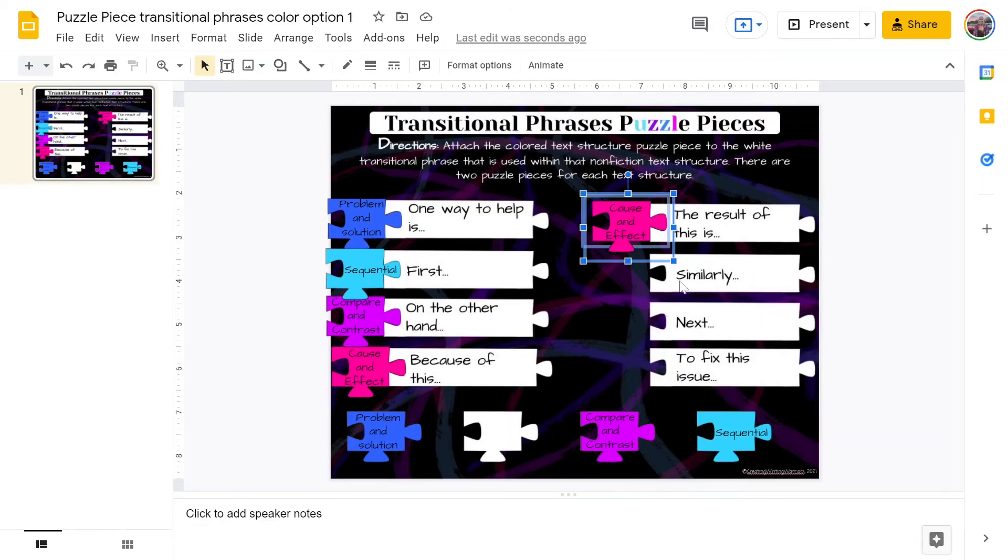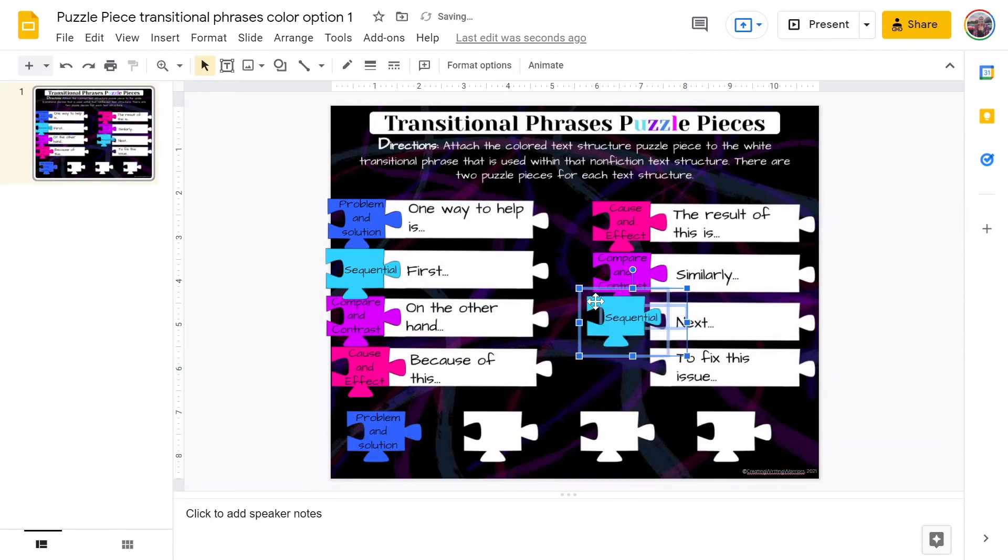Moving on right underneath that cause and effect text structure, we have the transitional phrase similarly. Similarly is something that a writer would use to compare two things. Students can come to the conclusion that that is a compare and contrast text structure. They grab this purple puzzle piece and they pull it up.